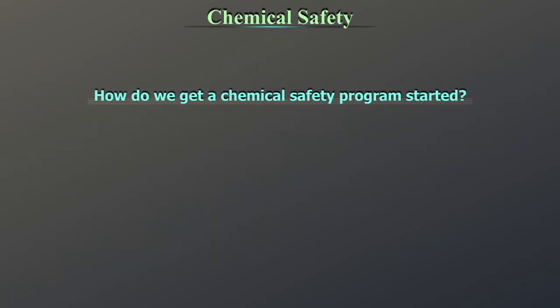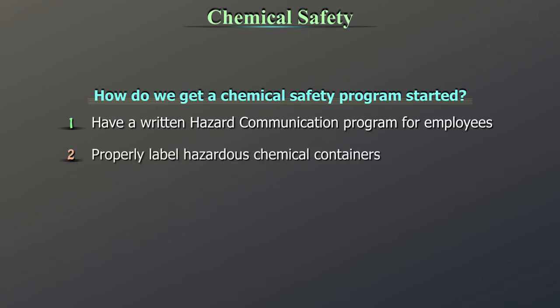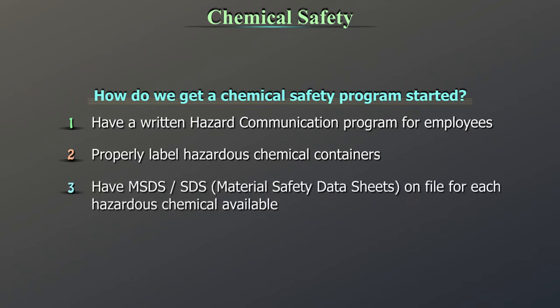How do we get a chemical safety program started? Eight suggested steps are: (1) Have a written hazard communication program for employees. (2) Properly label hazardous chemical containers. (3) Have MSDS or SDS — Material Safety Data Sheets — on file for each hazardous chemical available.